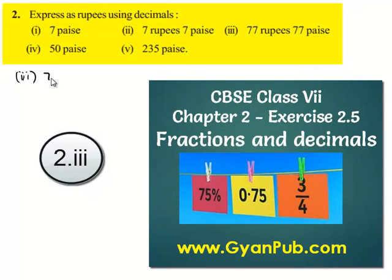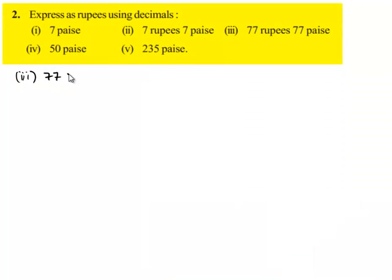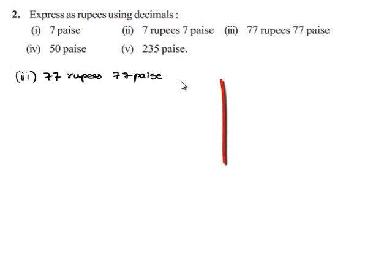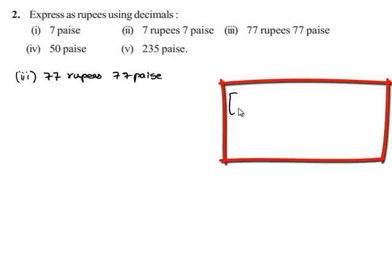Moving on to the third bit, that is given to convert 77 rupees and 77 paise into decimals as rupees. We know that 1 rupee is equal to 100 paise. This implies 1 paise is equal to 1 by 100 rupees.